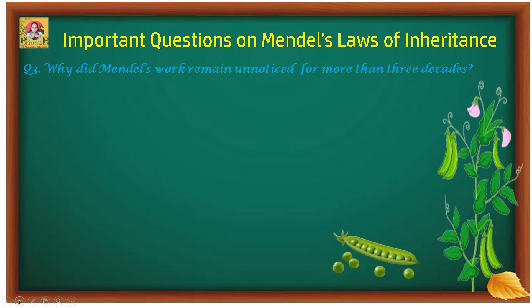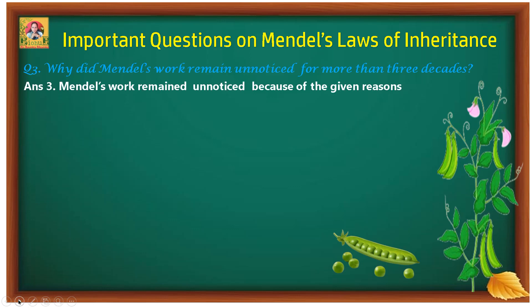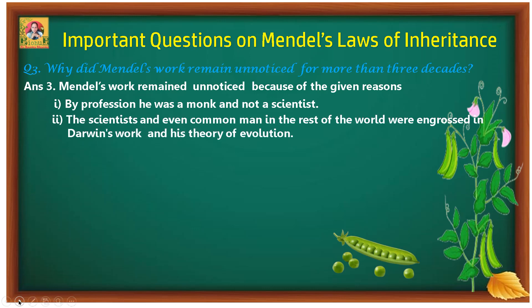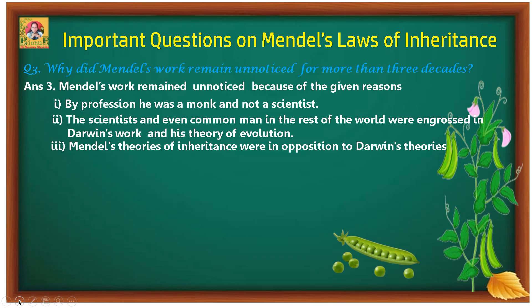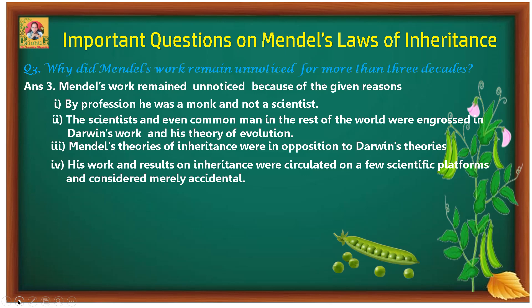Third question: why did Mendel's work remain unnoticed for more than three decades? The first reason was that by profession Mendel was a monk and not a scientist. Second, when Mendel was trying to explain his findings, Charles Darwin came up with his theory of the origin of species, so the scientific community and even the common man were engrossed in Darwin's work and his theory of evolution.